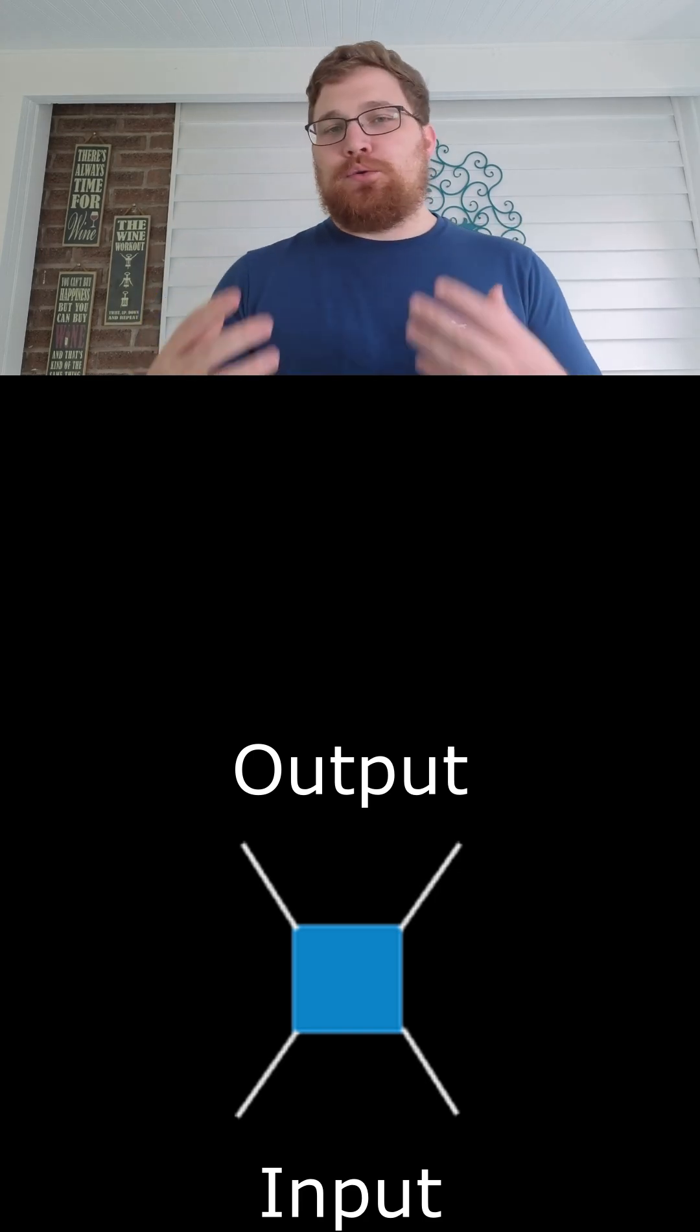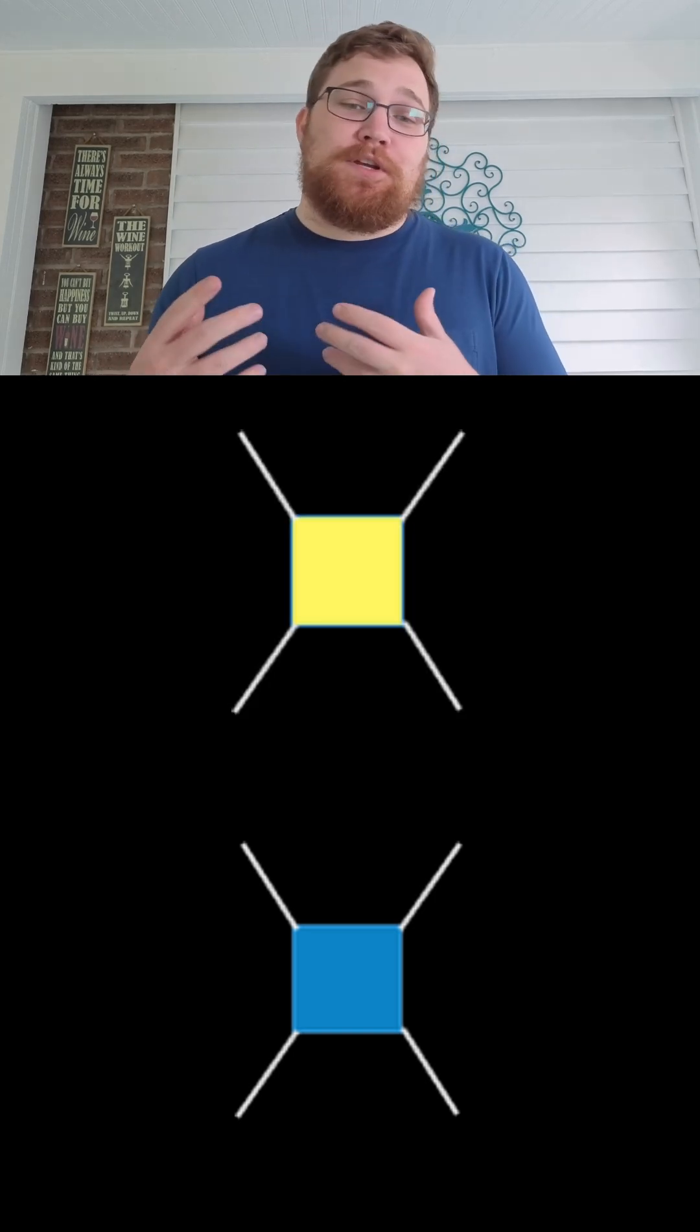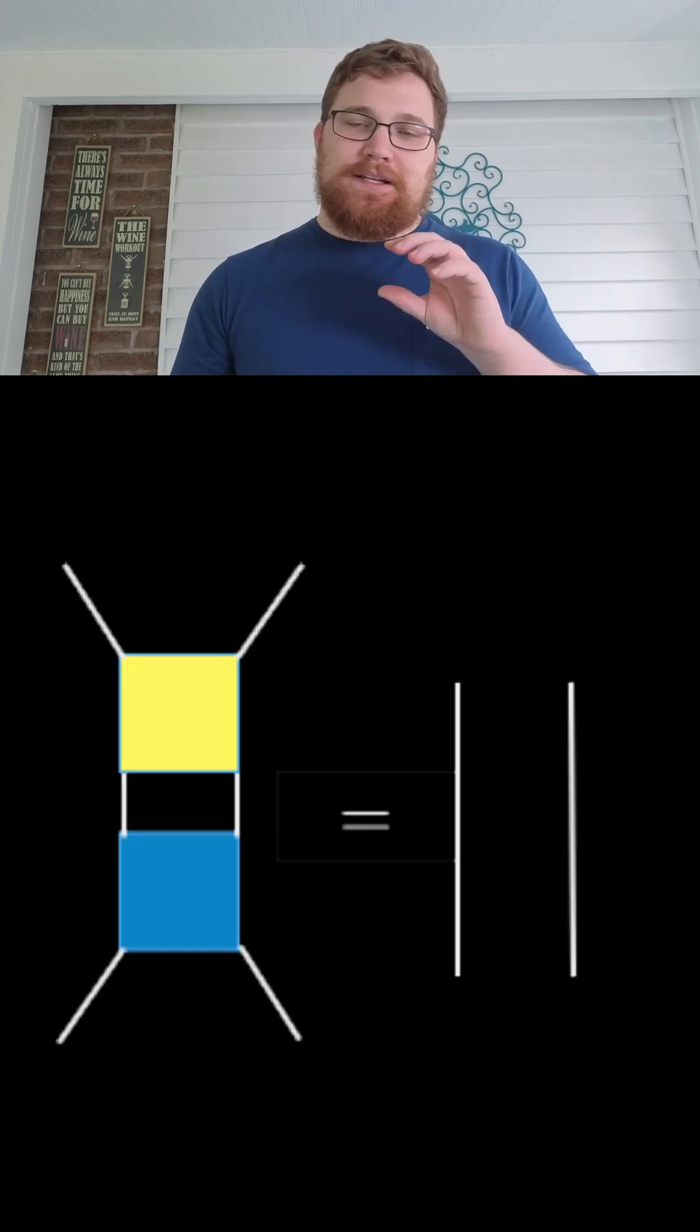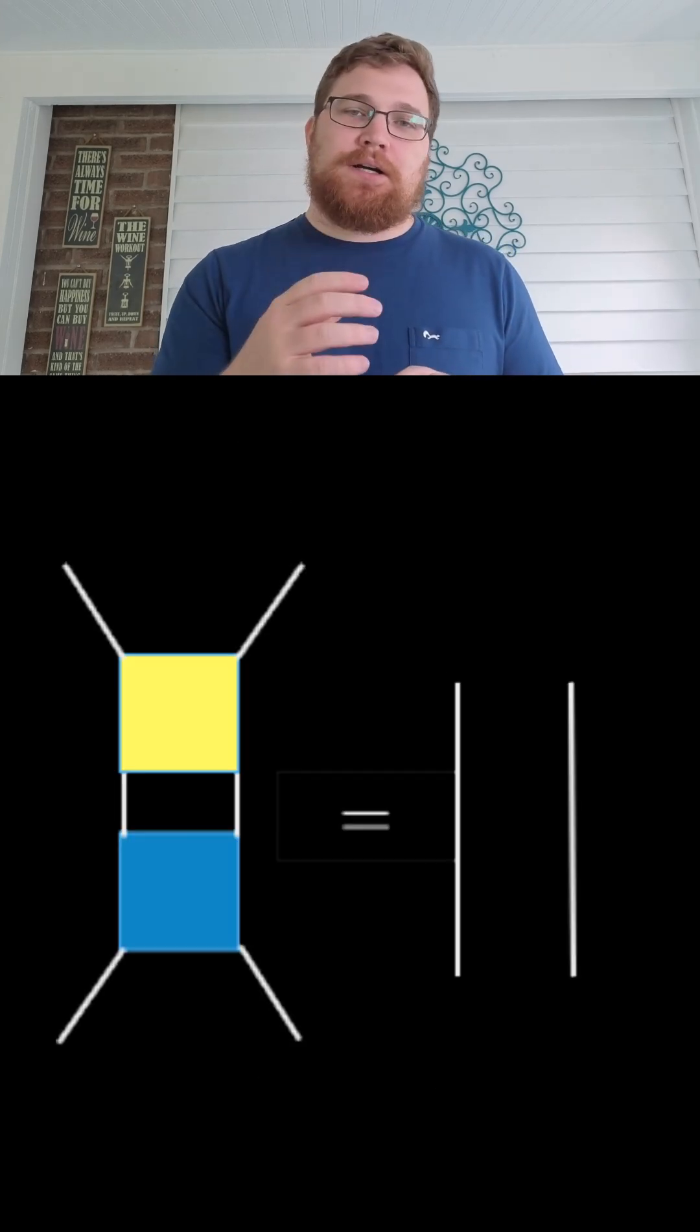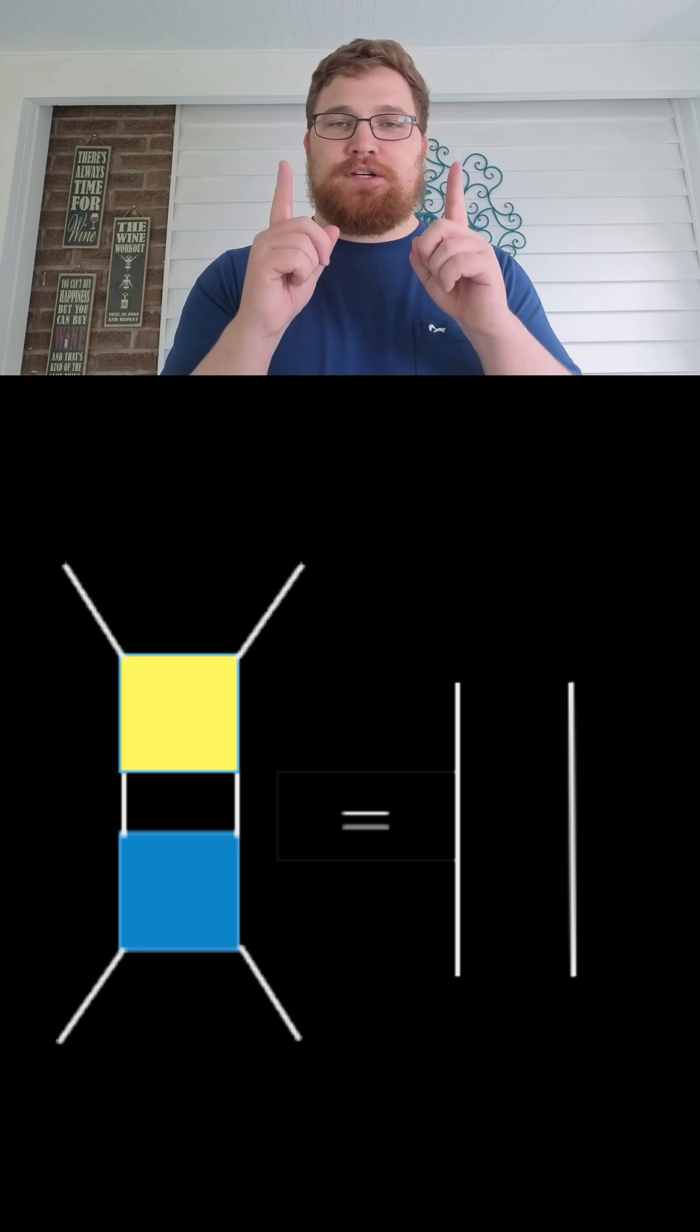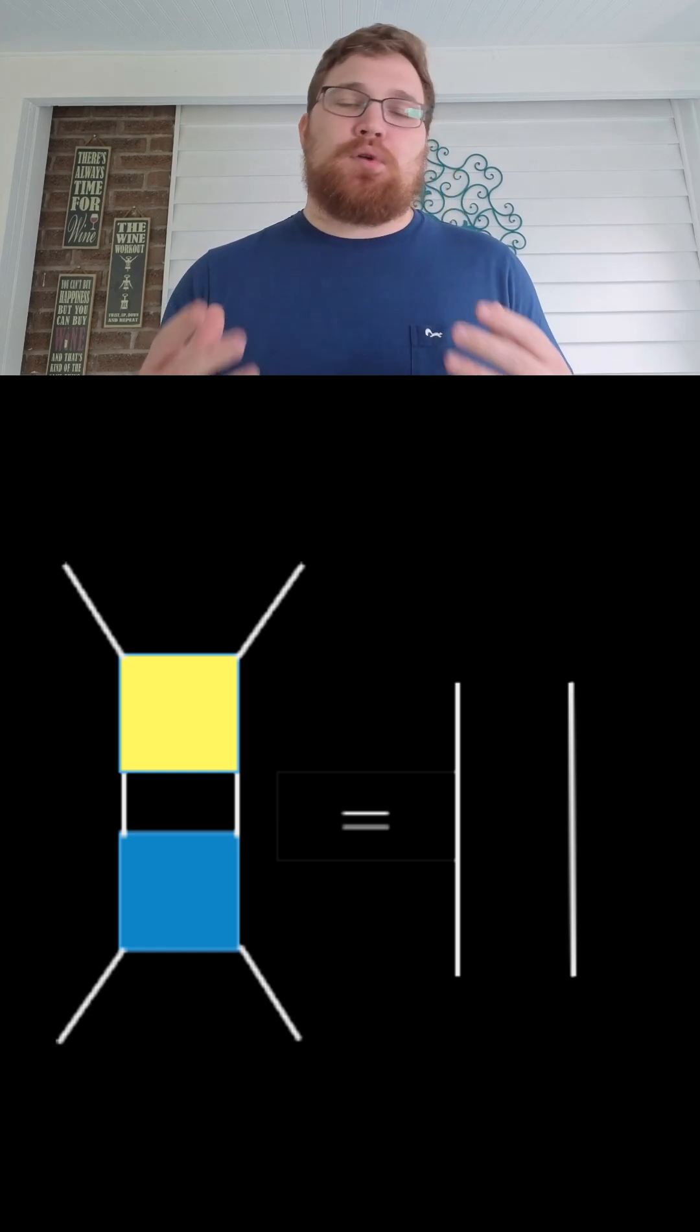You can think of the bottom legs as the qubit input legs and the top legs as the output legs. Quantum gates are unitary, which means that the Hermitian conjugate of this gate is also its inverse. I'm going to color the Hermitian conjugate as yellow. Connecting the blue box to the yellow box gives us the identity, which is just pictured as two lines. And that is this gate's property that it is a unitary gate.